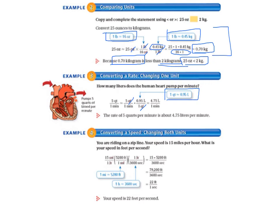So we have 5 times 0.95, and we just have 1s on the bottom, but our quarts are gone. So we have 5 times 0.95, which is 4.75 liters, and the minutes did not get canceled out, so that's still on the bottom. It's 4.75 liters per minute. The rate of 5 quarts per minute is about 4.75 liters per minute.